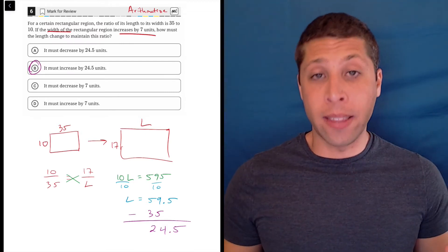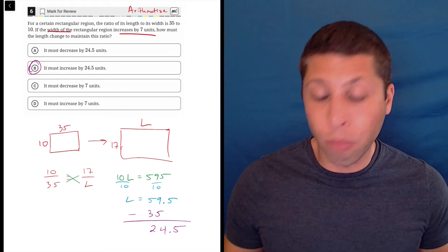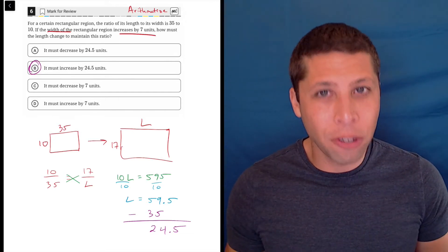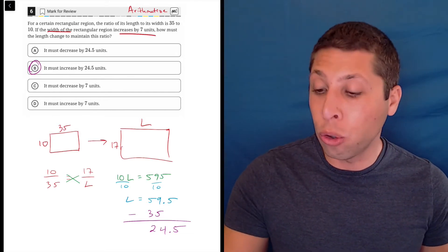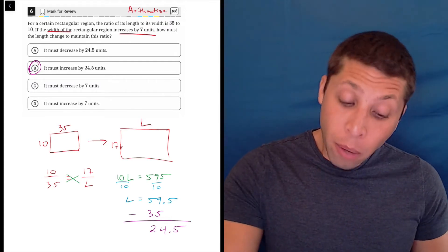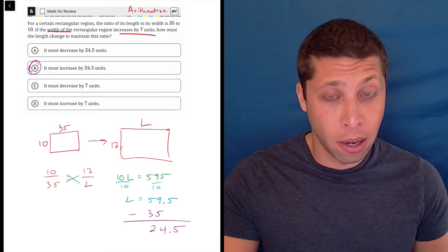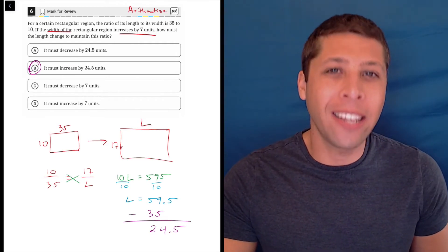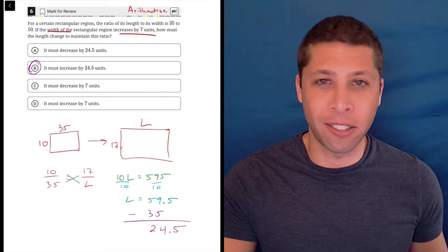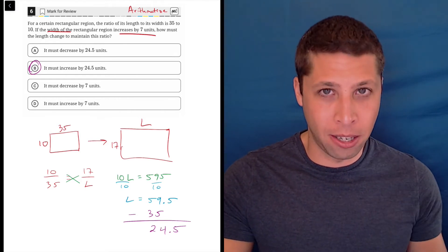That's the math behind this, and I think it's pretty easy to do. You should know how to do it. It's something that you could see again. But I will say that I kind of knew B was going to be the answer before I did any of this work, and it's because I understand the SAT, not because I necessarily understand the math.